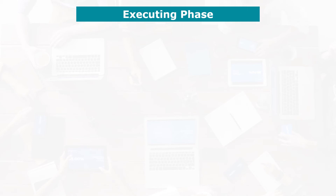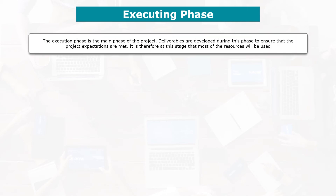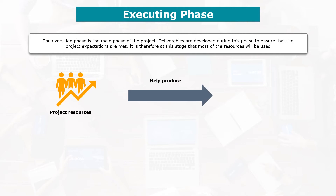Let's talk about the execution phase of a project. The execution phase is the main phase of the project. During this phase, the deliverables are developed to ensure that the expectations of the project are met. It is at this stage that we will use most of the resources, namely time, money, and human resources, in order to produce the various deliverables of the project.